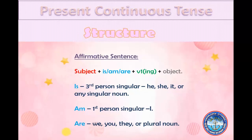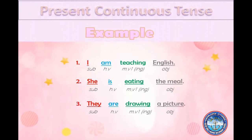Now I'm going to tell you where to use these helping verbs. Is is used with subjects in third person singular: he, she, it, or any singular noun. Am is used with the subject in first person singular: I. Are is used with subjects in first person plural, second person singular and plural, and third person plural: we, you, and they.